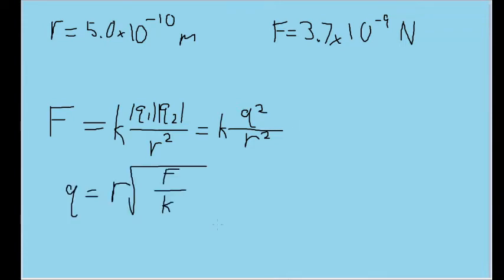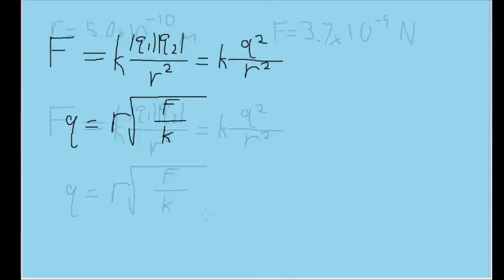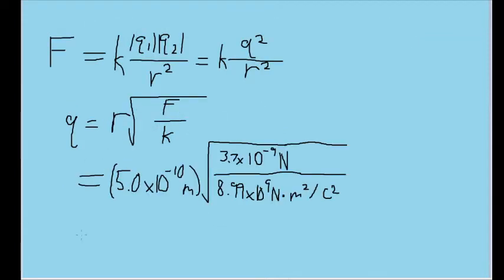And this is our formula. Now time to plug in the values we have. Like so, and we end up with an answer of 3.2 times 10 to the negative 19 coulombs.